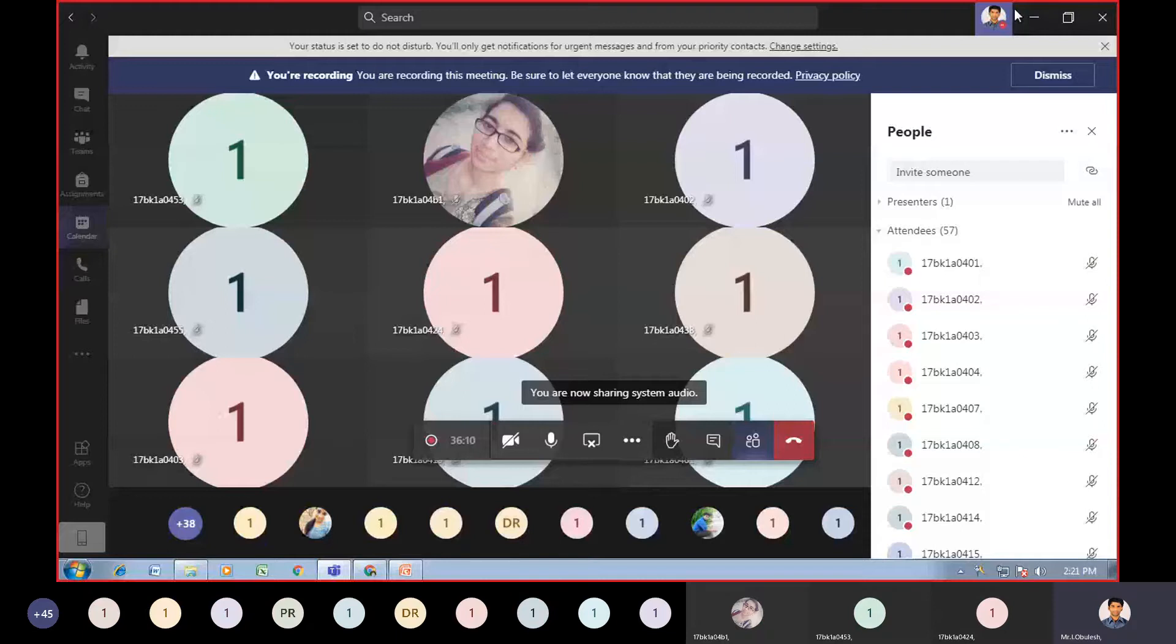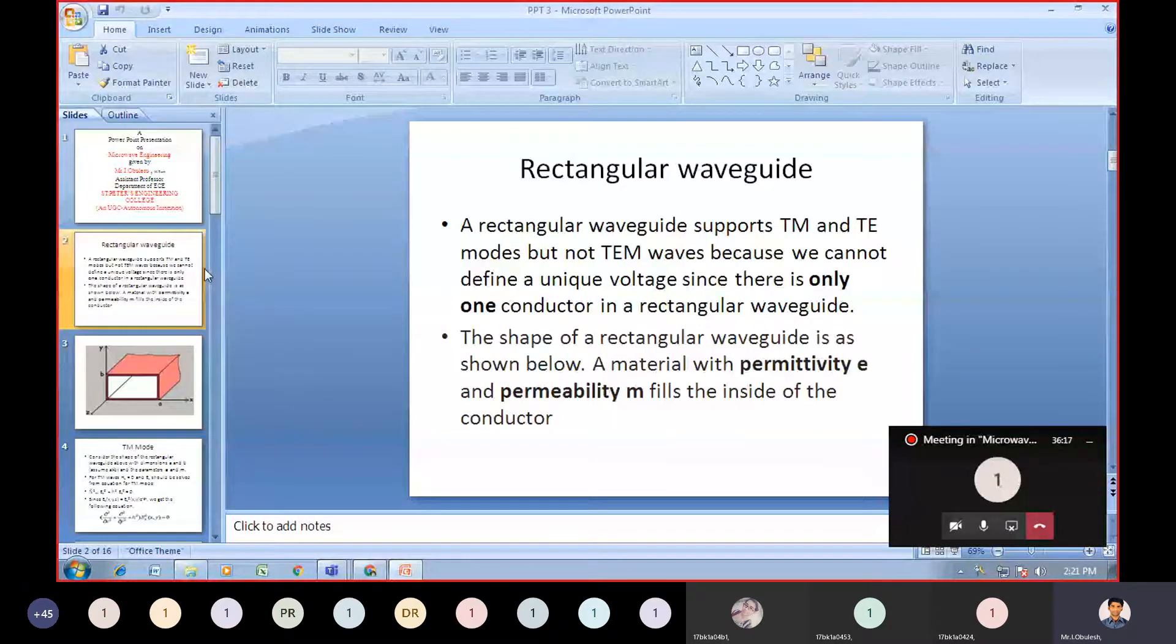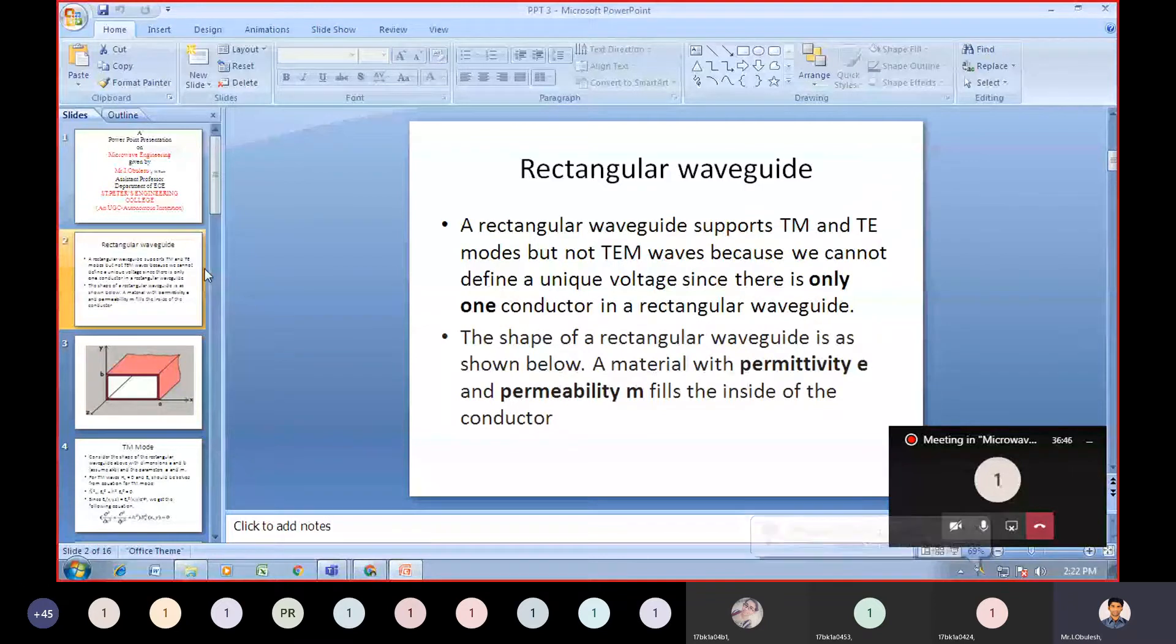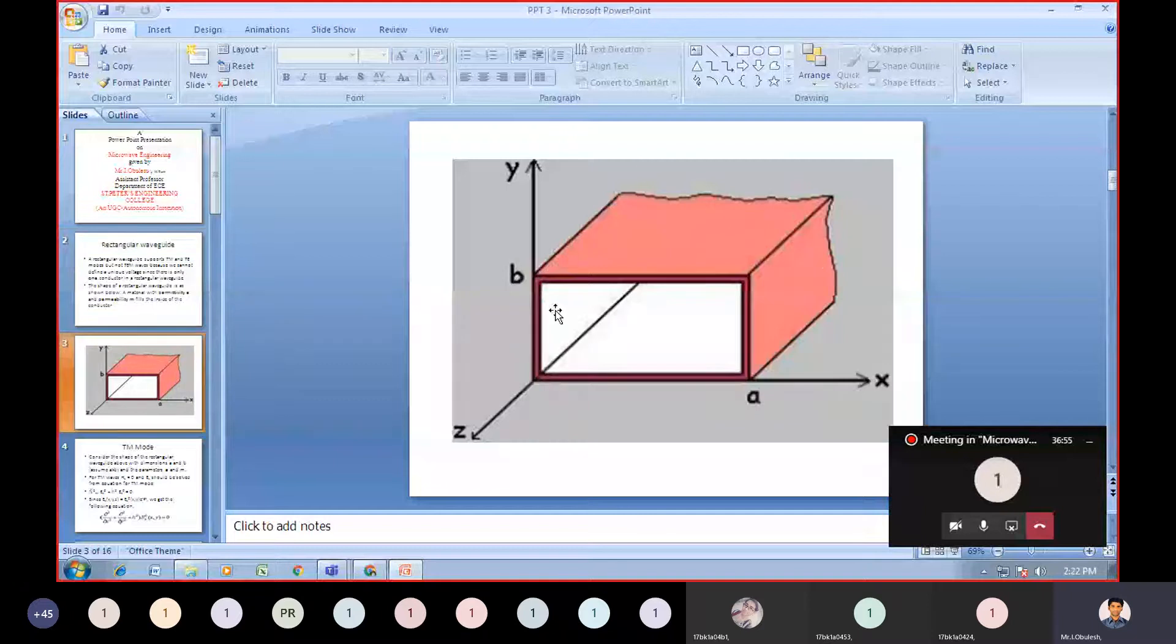Coming to the next one, rectangular waveguides. A rectangular waveguide supports TM and TE modes but not TEM waves because we cannot define a unique voltage since there is only one conductor inside a rectangular waveguide. The shape of a rectangular waveguide is as shown in the figure, and a material with permittivity epsilon and permeability mu fills the inside of this conductor.